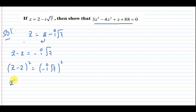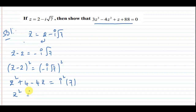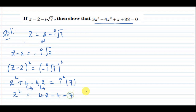We have a minus b whole square: a squared minus 2ab plus b squared. Expanding: Z squared minus 4Z plus 4 equals minus i squared into 7. Since i squared equals minus 1, root 7 squared is 7, so the right side equals 7. Therefore Z squared equals 4Z minus 11. This is equation number 1.